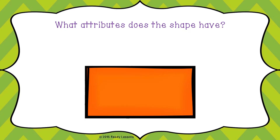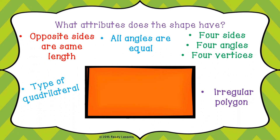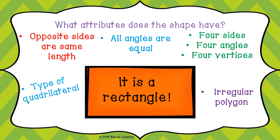Take a look at this shape. What do you think is the name of this shape? It is a rectangle. A rectangle has opposite sides that are of the same length. All angles are equal. It has four sides, four angles, and four vertices. It is, of course, a type of quadrilateral, and rectangle is an example of a regular polygon.